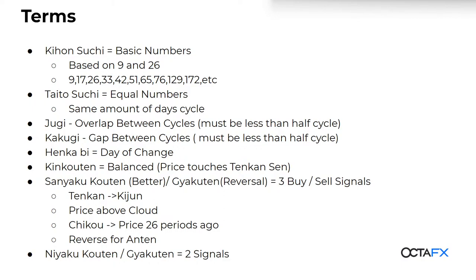Hengka is basically what we call swing high and swing low — in Ichimoku it's the day the market turns, the day of change. 'Hengka' means to change — like 'Henshin' in Kamen Rider. Tengkan means to direct or guide, not just change. Kingkoten means balance — it's when the price hits the Tengkan Sen and we call it Kingkoten, meaning buyers and sellers are neutral. When the price is stuck at the Tengkan, be careful. We often focus on the Kijun, but remember the fastest retracement always happens at the Tengkan.